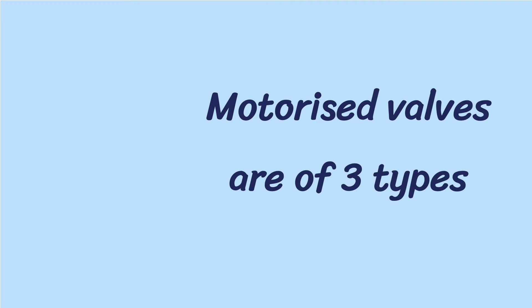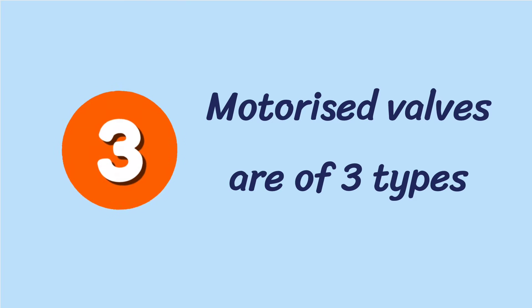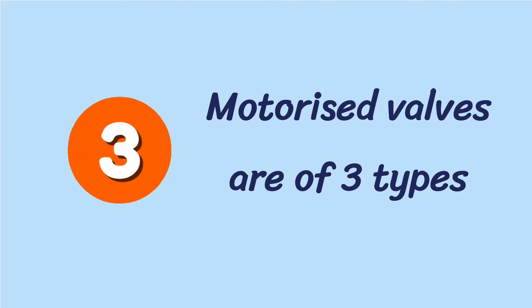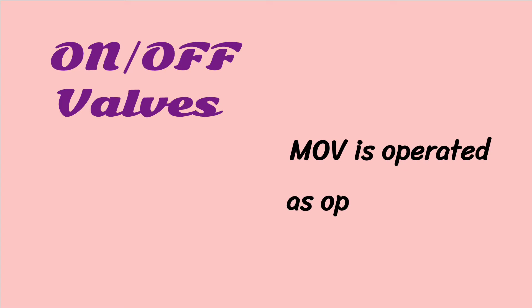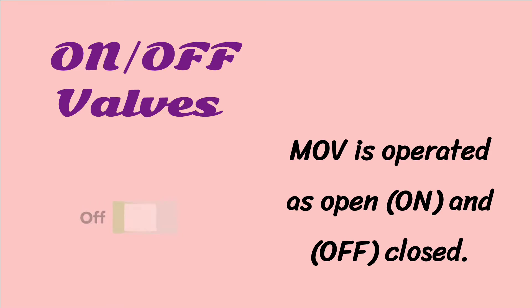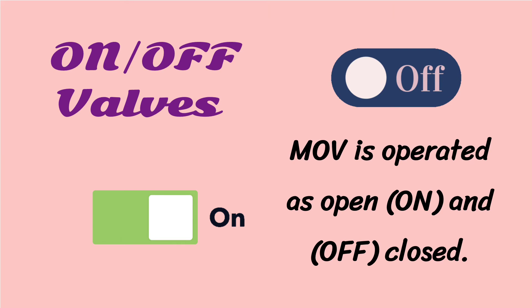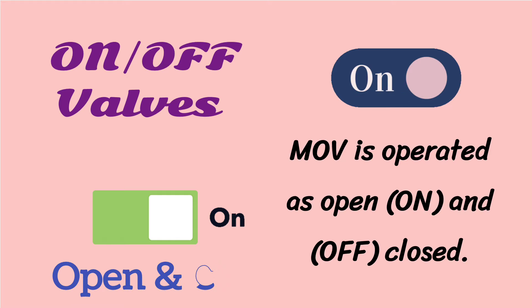Motorized valves are of three types. We will discuss these types one by one. The first one is on/off valves. This type of MOV is operated as open — means on — and close — means off. On giving command, the motorized valve operates as open and close.